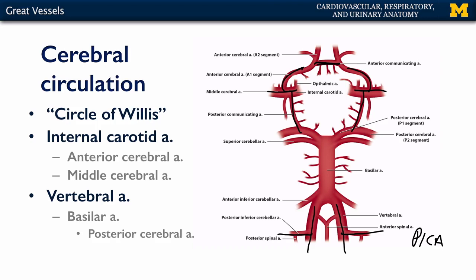PICA provides blood to the cerebellum and also provides an offshoot called posterior spinal arteries, of which there are two that are a source of blood for the spine. The vertebral arteries also provide branches to an anterior spinal artery. So there is a single anterior spinal artery and two posterior spinal arteries.